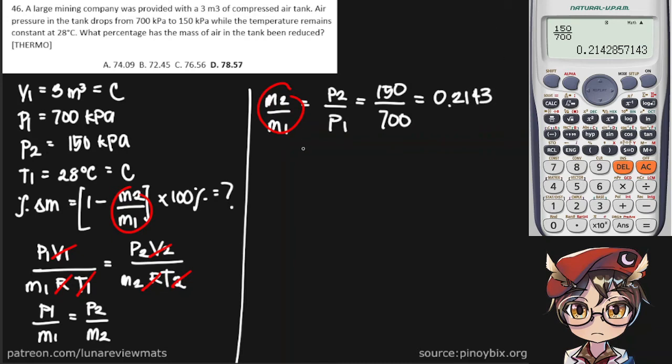That is our mass ratio. So going back to our initial equation, one minus m2 over m1, which is 0.2143, multiplied by 100 percent.